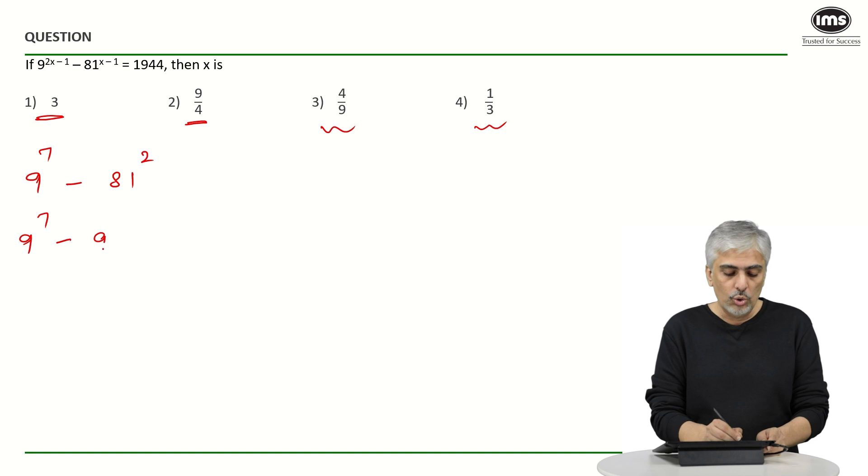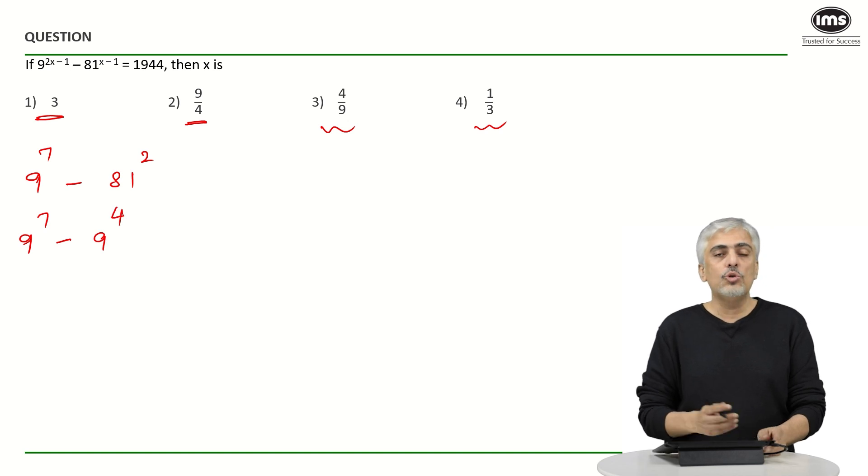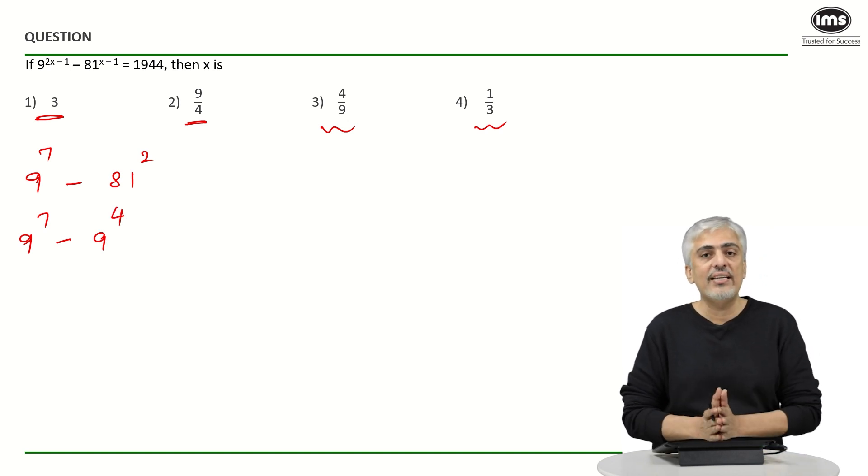So this will become 9 raised to 7 minus 9 raised to 4. So this whole thing will become 9 raised to 4. So is 9 raised to 7 minus 9 raised to 4, 1944?